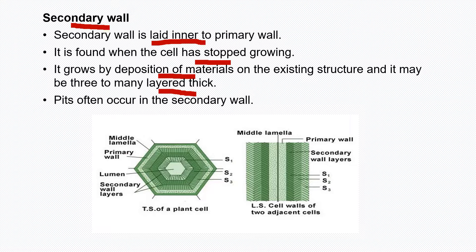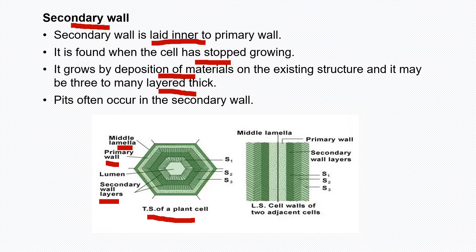In this transverse section of a plant cell, the middle lamella is the outermost layer present between two adjacent cells — just like a common wall between two rooms. Inside the middle lamella is the primary wall, which is a single layer. Inside the primary wall is the secondary wall, which here shows three layers: the innermost is S1, then S2, and then S3. Primary wall is single layer whereas secondary wall can have many layers.